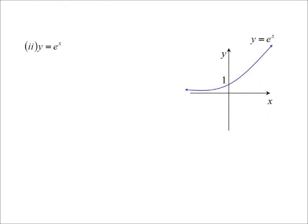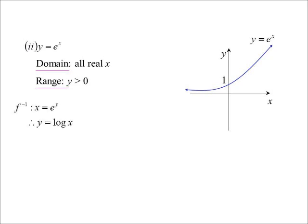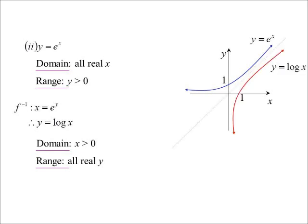Let's look at the exponential curve, y equals e to the power of x. This one illustrates a bit better how the domain and range swap over. The domain is all real x and the range is y greater than zero. The logarithm is the inverse of the exponential — so if x equals e to the power of y, then y equals log x. The domain of the log curve is x greater than zero, showing how the range of the original has become the domain of the inverse, and the range of the log curve is all real y, so the domain of the original has become the range of the inverse.